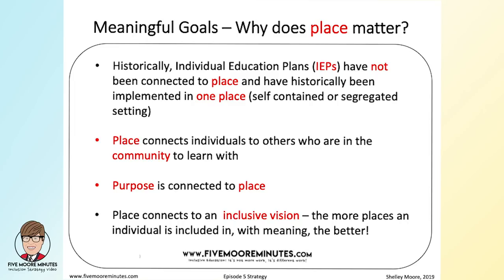The third reason this model is tricky connects to universal design: if you're pulling a kid out to work on a skill, you're assuming no one else in the community needs that support. For every kid on an intervention list, there are fifteen who aren't — and no one will be harmed by receiving supports designed for one or two kids. Norman Kuntz has a great example: pulling a kid out to work on a skill outside the setting they'll apply it is like pulling a kid out of a swimming pool, teaching them to swim in the parking lot, and then dropping them in the water. If you change the place, you change the purpose.